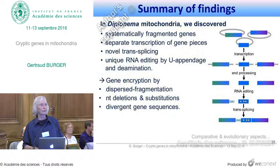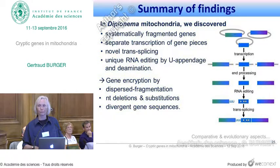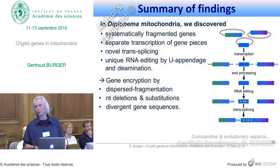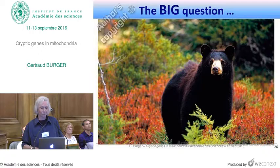A summary of our findings: we found systematically fragmented genes, separate transcription of the gene pieces, a novel type of trans-splicing, and U appendage RNA editing with deamination. Gene encryption in this organism occurs via dispersed fragmentation of genes, via deletions and substitutions, and via very divergent gene sequences.